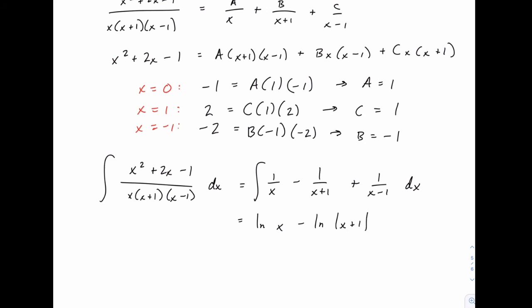1 over x of course integrates as natural log of x minus the natural log of x plus 1. That's a quick u substitution problem, but it's simple enough and familiar enough that I won't go through it again. And then the last one is also the natural log of x minus 1. So make sure that you're comfortable with that.